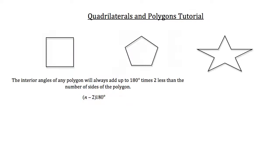All right, now that we know about interior angles, let's discuss exterior angles of any polygon. Exterior angles will always add up to 360 degrees. Let me show you what an exterior angle is.